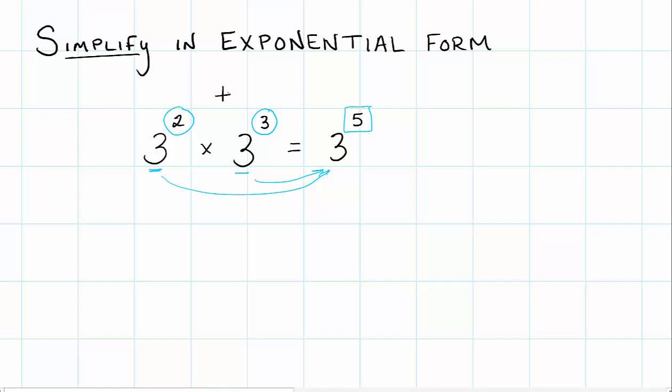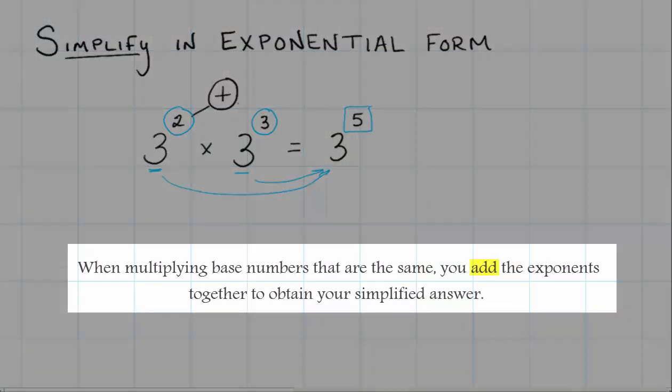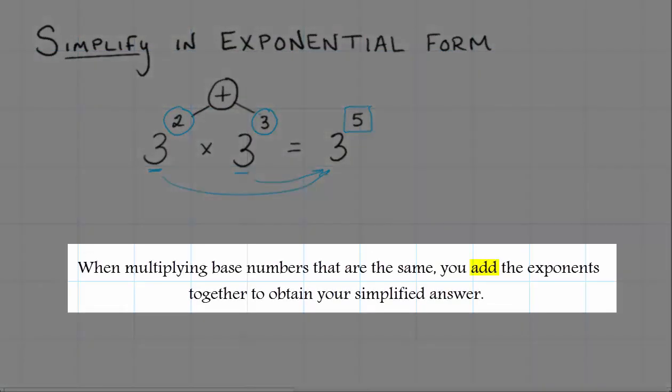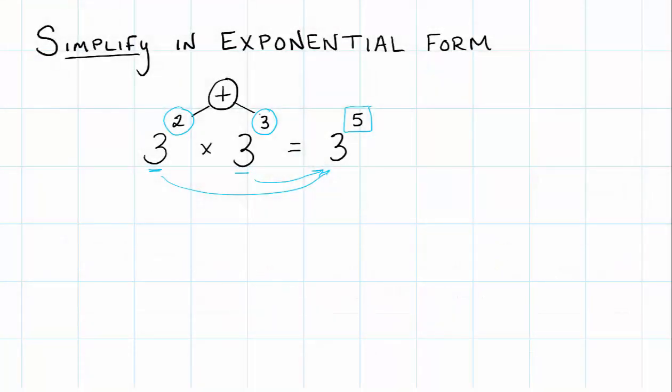Right. And so one of the things I like to use is bonds to kind of show that we are adding the two integers together that we have as exponents. I say integers because we could have positives or negatives.